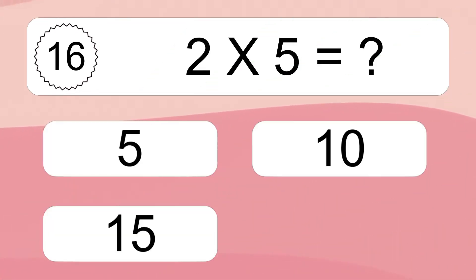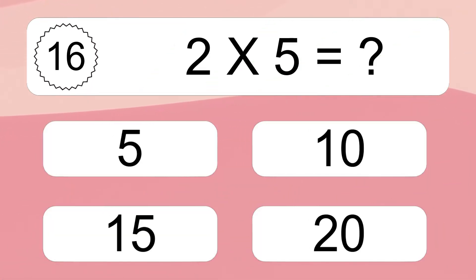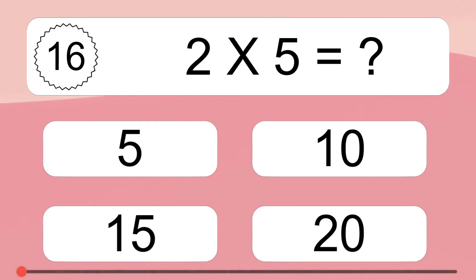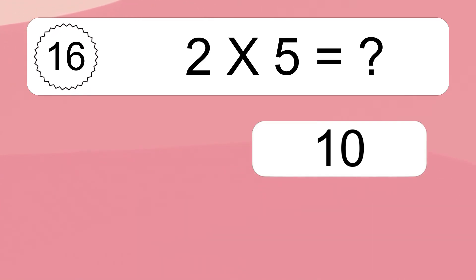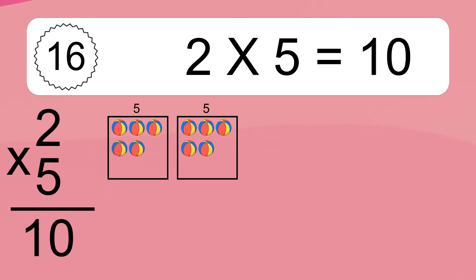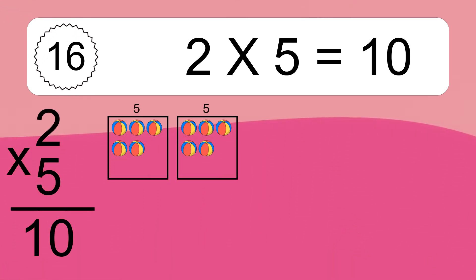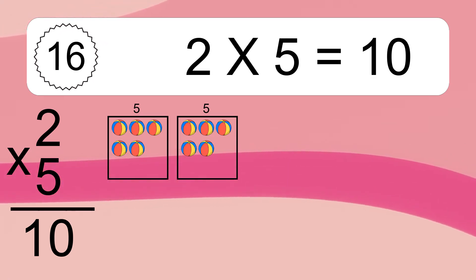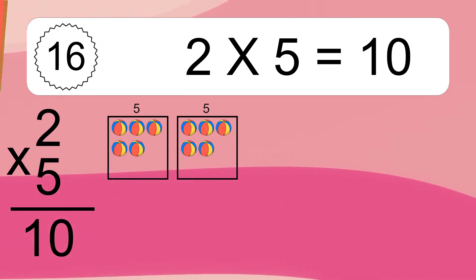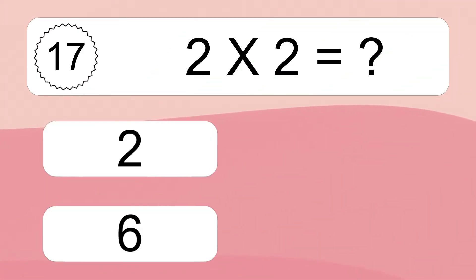2 times 5 equals what? 2 times 5 equals 10. We have 2 boxes, and each box has 5 colorful balls inside. If you count all the balls in all the boxes together, you will have 2 times 5 balls. This equals 10 balls.